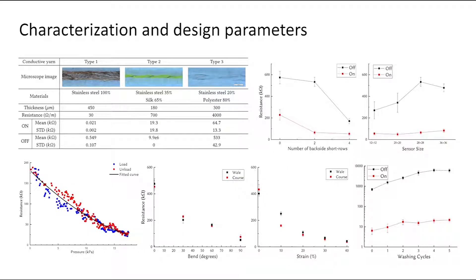To optimize the performance, we investigate the effect of various design variables. We characterize the resistance profile of our sensing units under the application of external pressure. Performance are optimized by investigating the effect of conductive yarns, sensor size, and the amount of conductive yarns incorporated.